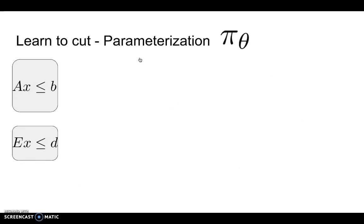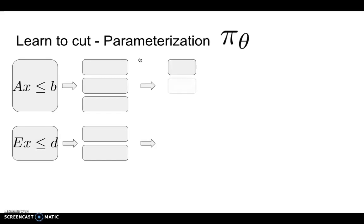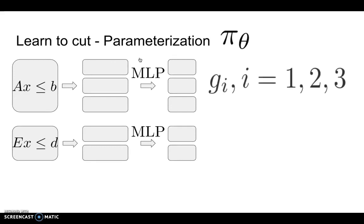Now we briefly describe the parameterization of the policy. Let us assume for simplicity that there are three constraints that are already in LP and two more constraints that we can add to the LP. First, we use multilayer perceptron, a neural network architecture which embeds each of the original constraints into a hidden vector representation. We use GI to refer to the embedded vector of the old constraints. We use HJ to refer to the embedded vector of the newly added constraints.